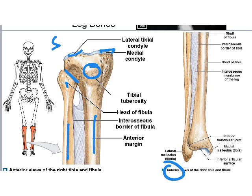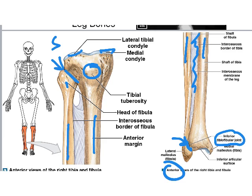The head of the fibula articulates with the tibia via a small joint. Moving distally, there's an interosseous membrane between the shaft of the fibula and shaft of the tibia — just like there was between the radius and ulna — and a second tibiofibular joint distally, giving both a proximal and distal tibiofibular joint.